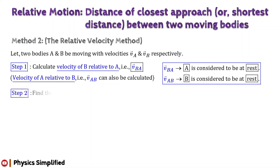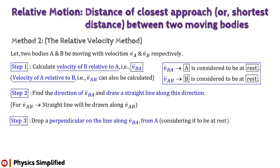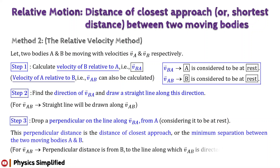In step two, we will find either the direction of vector v_BA or vector v_AB, and will draw a line along that direction. In our third and final step, for the relative velocity vector v_BA, we will drop a perpendicular from A on the line along which this relative velocity is directed. The minimum distance between a fixed point and any point on a line is the perpendicular distance of the fixed point from the line. Since A is considered to be at rest for the relative velocity vector v_BA, this perpendicular distance will be the distance of closest approach, or the minimum separation between the two moving bodies A and B. Remember that for vector v_AB, the perpendicular distance will be from B to the line along which this relative velocity is directed.